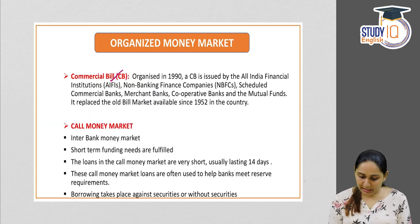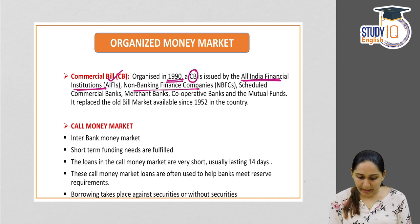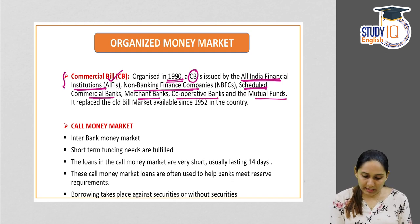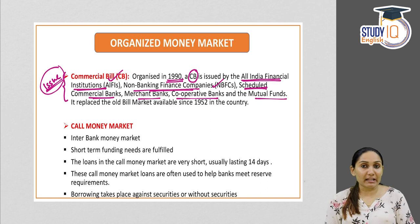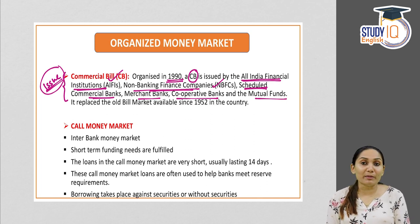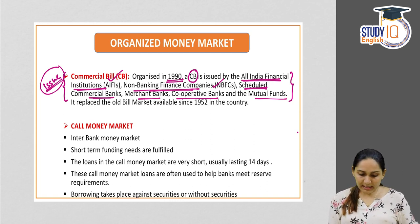Fourth is commercial bill, organized in 1990. A commercial bill can be issued by All India financial institutions, non-banking financial companies, scheduled commercial banks, merchant banks, cooperative banks, and mutual funds. It replaced the old bill market that had been available since 1952.